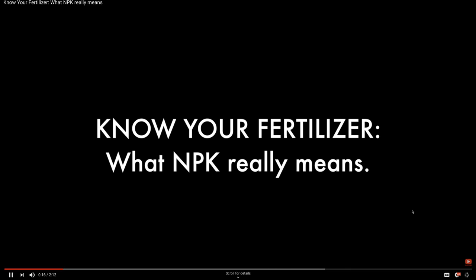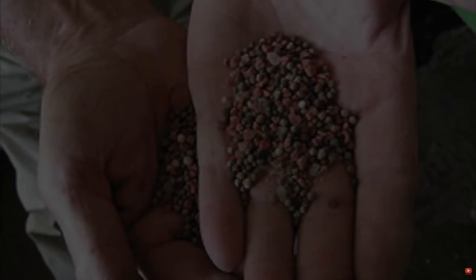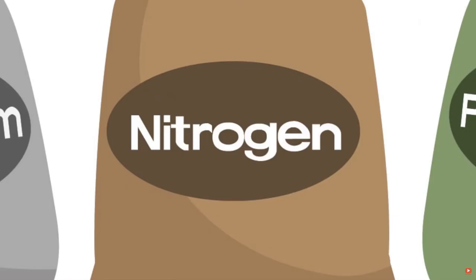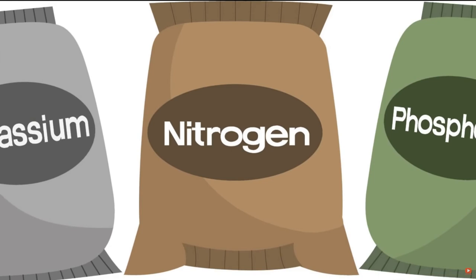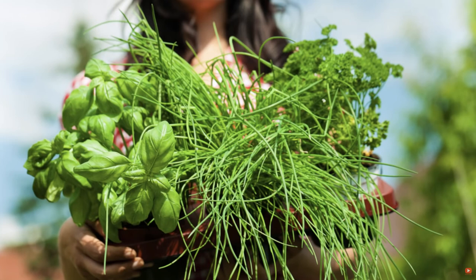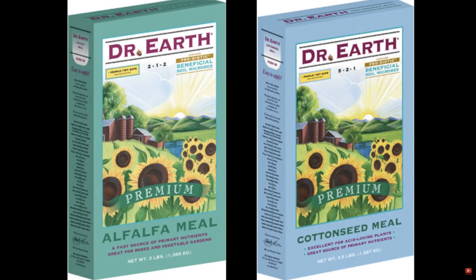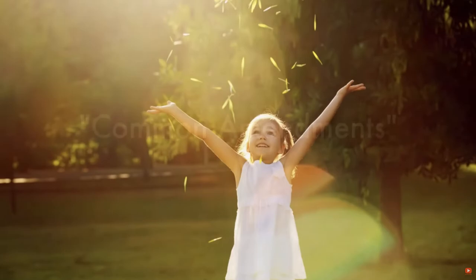The world of fertilizers can be complex, but it all hinges on three letters: NPK. These are the three macronutrients essential for plant growth — nitrogen, phosphorus, and potassium. Nitrogen gets top billing because it's responsible for keeping plants green, which is why fertilizers for grass tend to have a high N factor. Nitrogen also feeds new shoots and plant growth. Alfalfa meal, cotton seed meal, blood meal, and fish powder are some of the most common amendments with high nitrogen content.